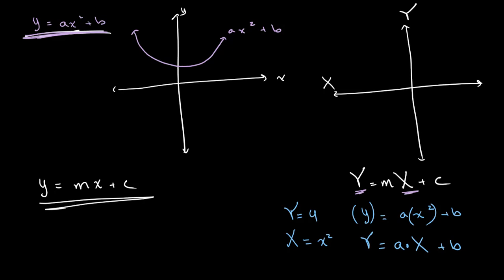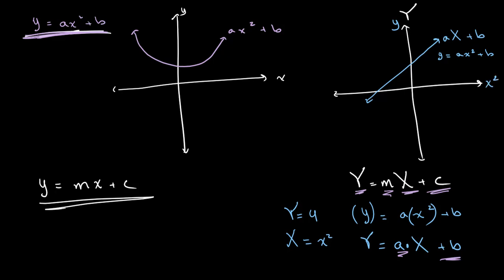This follows our linear format because 'a' can be seen as M (the gradient) and B can be seen as C (the intercept). If we draw this on our graph it will be a straight line. This equation is essentially the same as y equals ax squared plus B, only our y-axis is capital Y and our x-axis is capital X, which equals x squared.